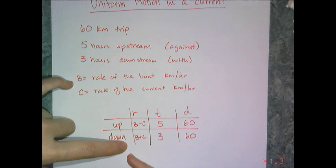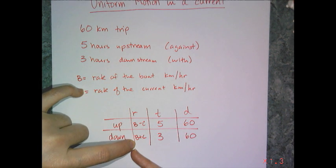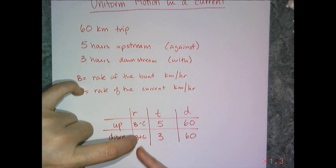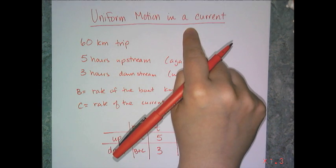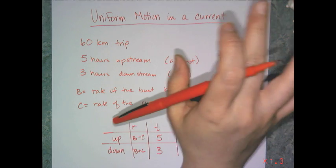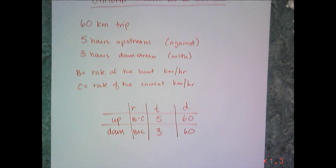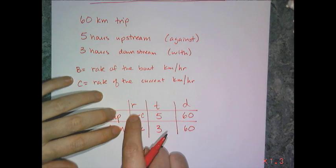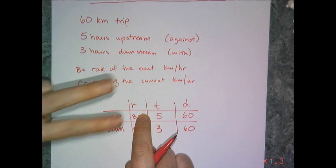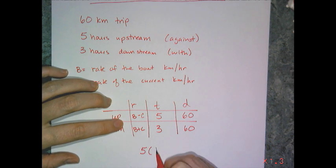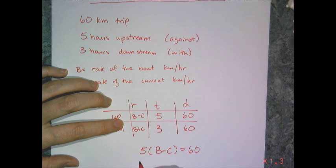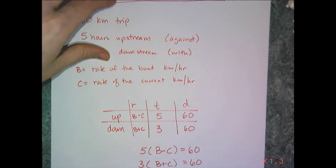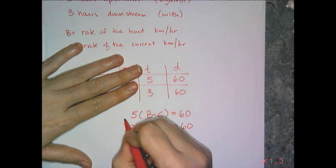So, if the boat's going B kilometers per hour, and the current's going C, then its net speed is B plus C. And uniform motion into current problems are ready-made for the elimination method. Because if I go ahead and write my equations, I have two variables, which means I need two equations. So, five times the boat minus the current has to equal 60. And three times the boat plus the current also has to equal 60. And so, this is my system of equations.